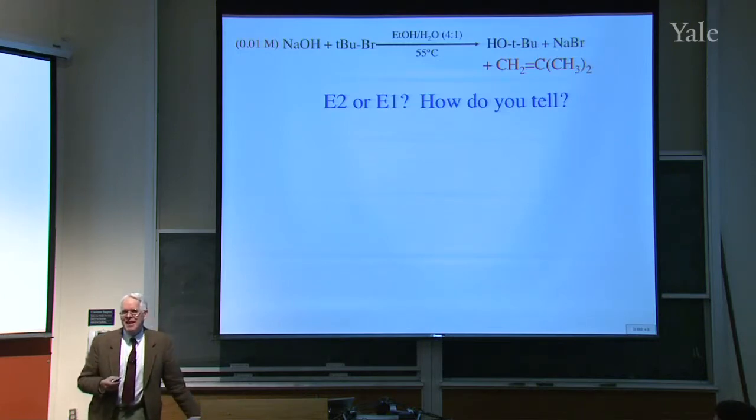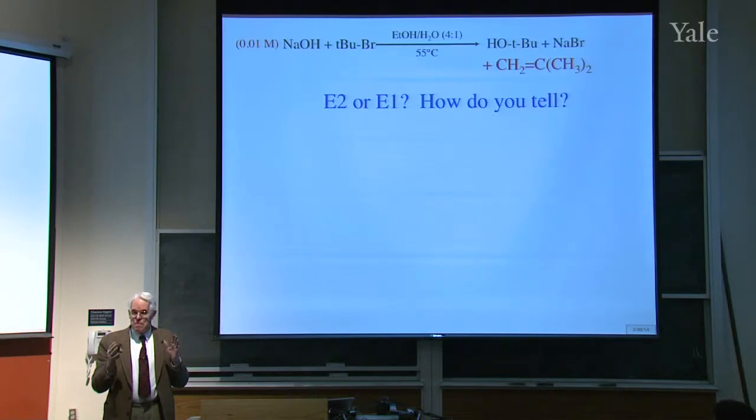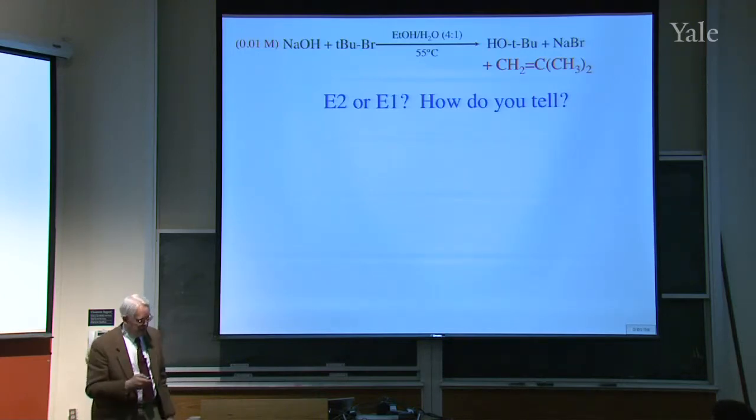How could you tell whether it's E1 or E2? Luke? Maybe just the rate. What about the rate? See if it's bimolecular. That's what the names mean. So you could follow the names. E2 means it's bimolecular, the rate depends on the concentration of hydroxide. If the rate limiting step were breaking the bond, no hydroxide involved there, so the rate wouldn't depend on that.